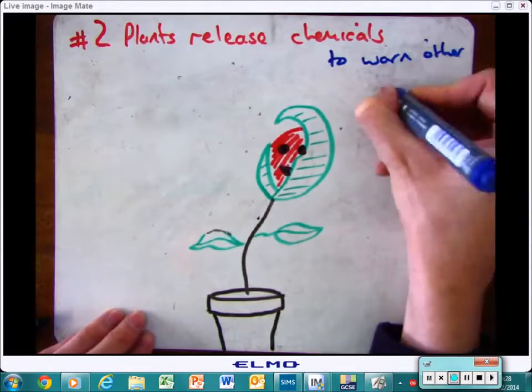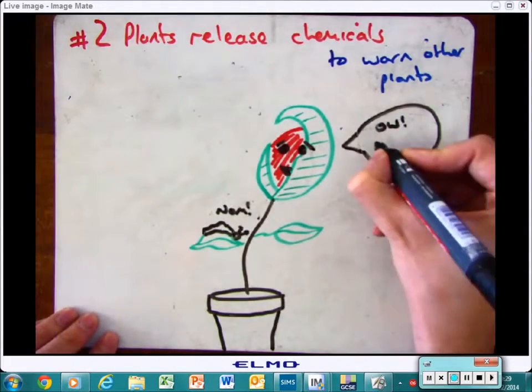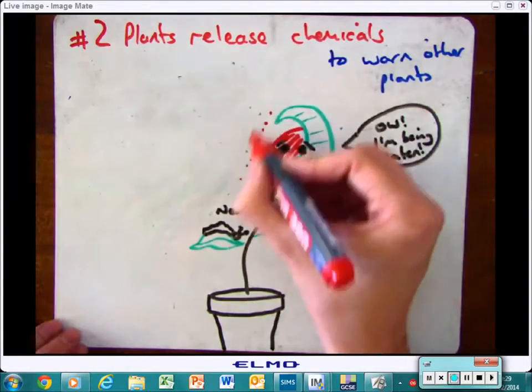The next section then is going to have a look at how plants can communicate with each other, and the main reason they do this is they can warn each other. So some plants will have leaves that can release chemicals into the air if they're being eaten.